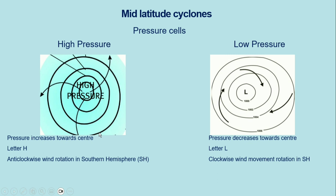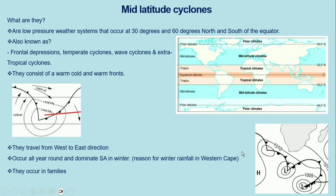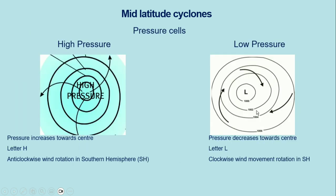For a high pressure cell, the lowest pressure is at the outside and as you go inside your pressure will increase. For a low pressure cell in the southern hemisphere, the wind rotation will be in the clockwise direction. When talking about pressure in a low pressure cell, your pressure decreases towards the center — at the outer isobar you might have 1006 and at the inner isobar 1000.